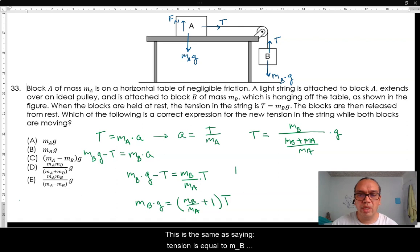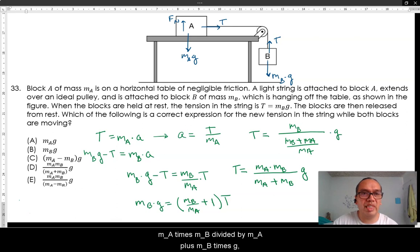Or, in other words, the tension we're looking for is equal to MA times MB divided by MA plus MB times G. And that is option D.